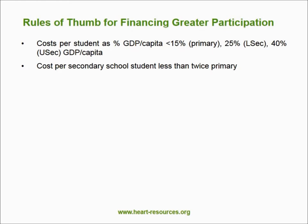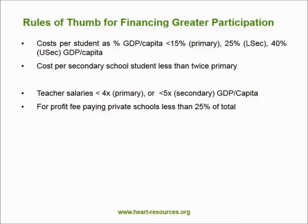Another rule of thumb is that cost per secondary school student should generally be less than twice those at primary level, and even 50% more is probably both possible and desirable. This does not mean degrading quality — it simply means being more efficient in using available resources and asking hard questions about why secondary schools are much more expensive than primary schools when the main costs are in teacher salaries. The general principle should be that effective teachers are being paid fairly similar amounts whether they are working with primary or secondary school students.